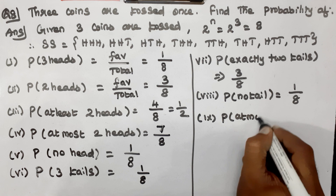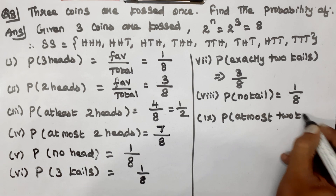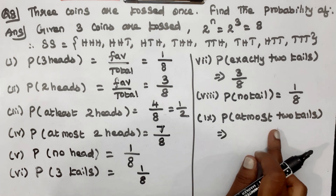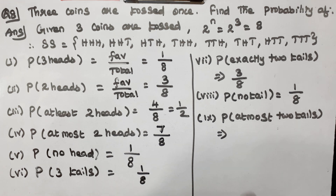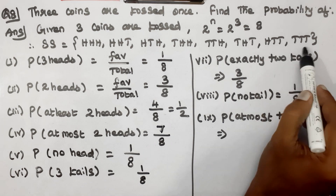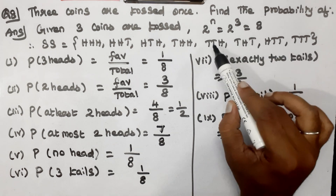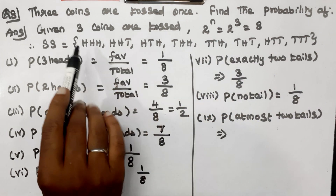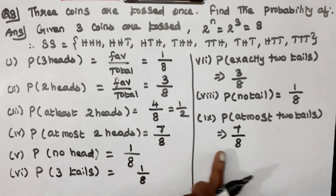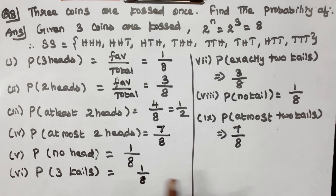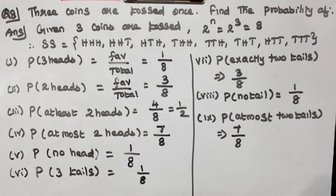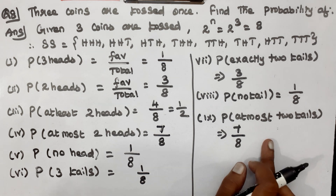Question number 9: Probability of at most 2 tails. At most 2 tails includes outcomes with 0, 1, or 2 tails — that is 7 outcomes. So the answer is 7 by 8. The correct rule makes this a very easy question.